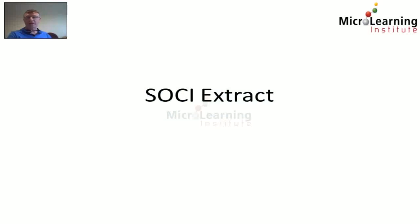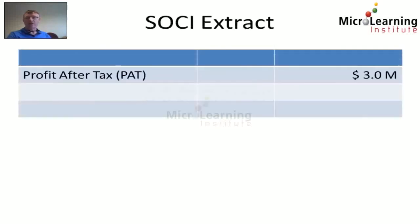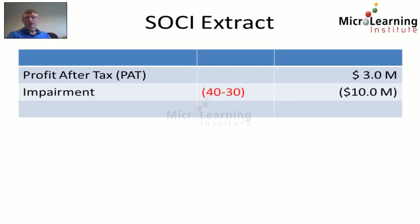Looking at the statement of comprehensive income extract, the profit after tax for the year prior to any impairment or restoration was 3 million dollars. We now need to recognize the full amount of the impairment — from 40 million dollars to 30 million dollars, not 31 — so the full impairment of 10 million dollars is expensed to the P&L, giving us a revised statement of comprehensive income showing a loss of 7 million dollars.